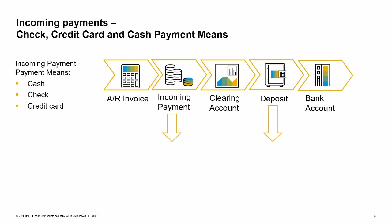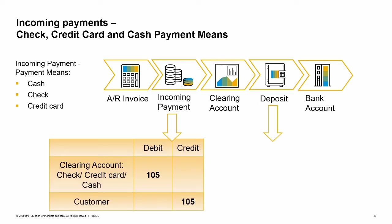There are four payment means options for incoming payments. We will first look at the three payment means that typically have a two-step process: cash, check, and credit card. Regardless of the payment means, when you issue a full incoming payment, the open invoice on the customer account is closed. Cash, check, and credit card payments are posted to a clearing or temporary account. Note that the term 'clearing' is used in the US localization; in other localizations it could be a temporary account or suspense account. The clearing accounts must be predefined during setup. In the example shown, an incoming payment of 105 generates the following automatic journal entry: debit to a clearing account — cash on hand or credit card checks received — and credit to the customer account.